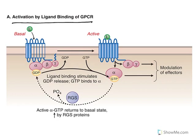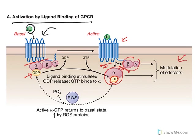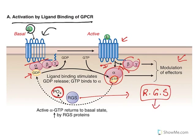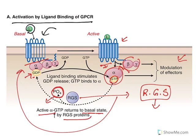When a ligand binds to a G-protein coupled receptor, which has alpha, beta, and gamma subunits, the alpha subunit has GDP. Once the ligand binds, GDP dissociates and GTP comes in. At the same time, all the proteins are dissociated from the receptor — alpha and beta-gamma are separated, as well as receptor proteins. After activation, GTP is de-phosphorylated — the phosphate comes out with the help of RGS, regulators of G protein signaling proteins, which have phosphatase activity. They release the phosphate and GTP is converted back to GDP, returning to the inactive state.